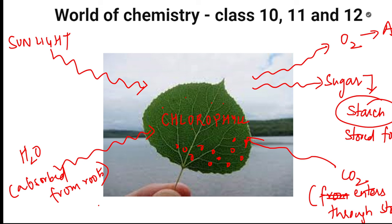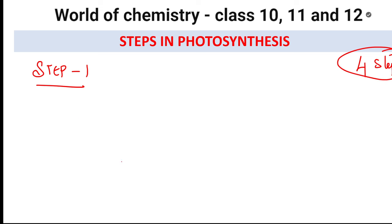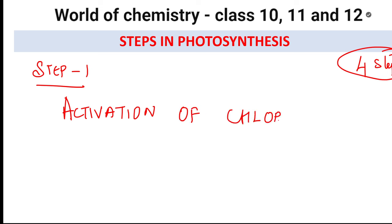Now, I know the definition and I know what is happening in the leaf. Next, I have to learn the steps. In photosynthesis, how many steps are there? You have to write this in the exam. The total number of steps are four. Let us learn step number one. Step number one is activation of chlorophyll in leaves.